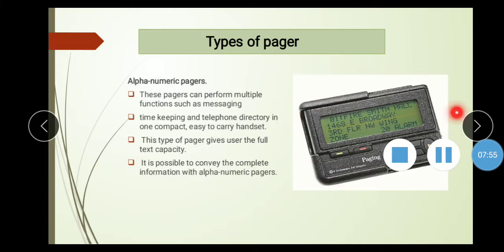See, now here, this is our alphanumerical pager. It is written here: Fire Smith Hall 1468 Broadway 3rd Floor New Wing Zone 20 alarm. This is the address. This address was sent and then the person received it. This is called a page.